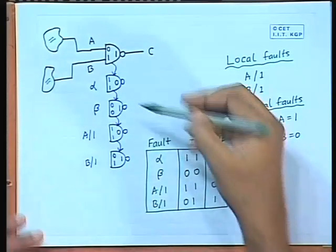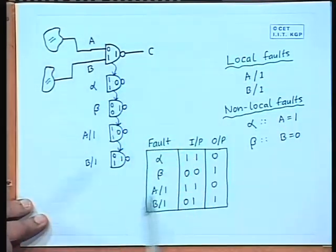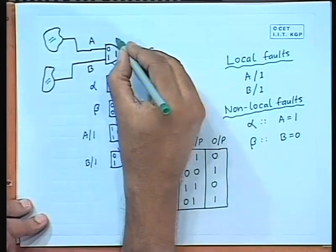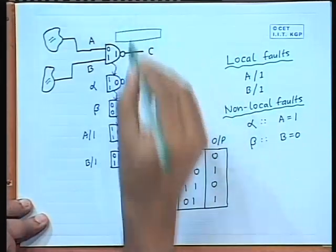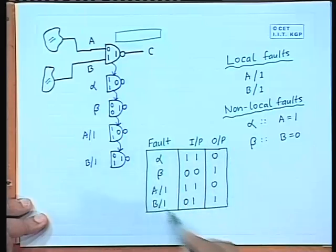During simulation, this information is stored in the form of a table — the concurrent fault list. The table contains columns: fault, input values, and output value. The four entries are: fault alpha, input 1,1, output 0; fault beta, input 0,0, output 1; A stuck-at-1, input 1,1, output 0; B stuck-at-1, input 0,1, output 1. With each gate there will be a fault list in this tabular form.